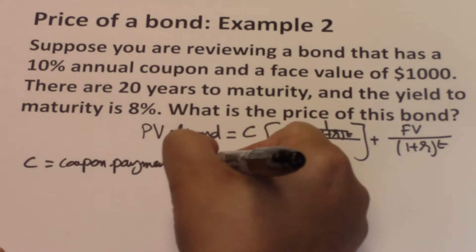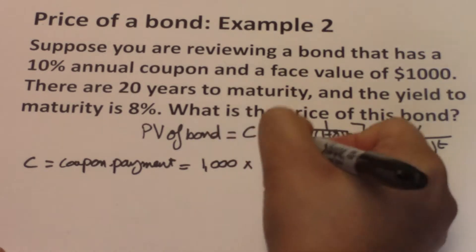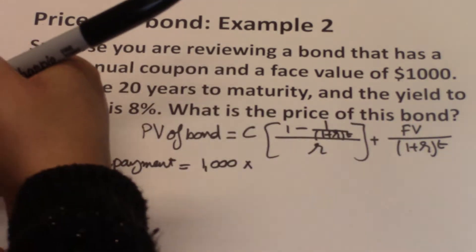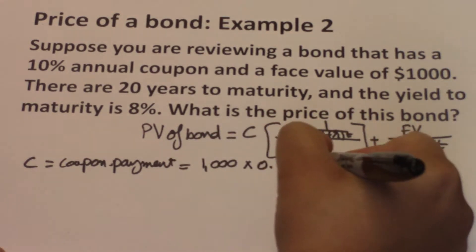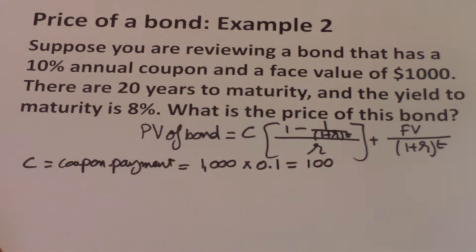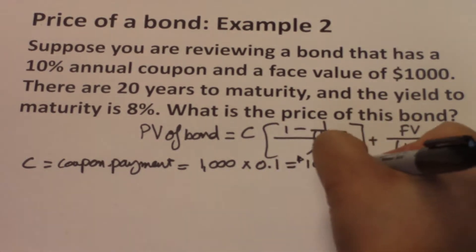This means it's $1,000 times the coupon rate of 10%, so $1,000 times 0.1. This means that this bond will pay you $100 in coupon payments every single year. You get this $100 per year.